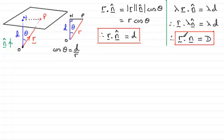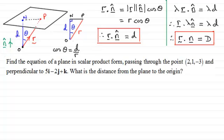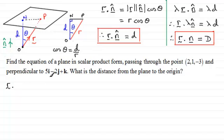Now I'll show you how we can use these equations in the following question, which is quite typical of what you'll get when finding the equation of a plane. Find the equation of a plane in scalar product form, passing through the point with coordinates (2, 1, −3) and perpendicular to the vector 5i − 2j + k. We also need to find the distance from the plane to the origin. The general form is R·N = D, and our normal vector N is (5, −2, 1), so R dotted with the column vector (5, −2, 1) equals the constant D, which we need to work out.